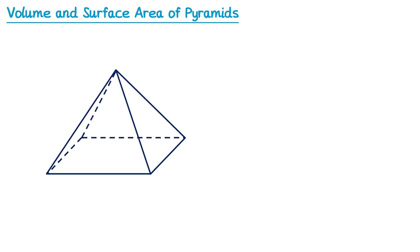Now let's have a look at surface area. The surface area of a pyramid is the total area of all of the faces. A square-based pyramid has 5 faces: the square on the bottom, and four triangular faces. To find the surface area we need the area of all of these. Let's add some dimensions — say the length of the square base is 16 centimetres. For surface area we don't need the perpendicular height; instead we need the length from the top of the pyramid down to the midpoint of the base of each triangle — let's say that length is 17 centimetres.